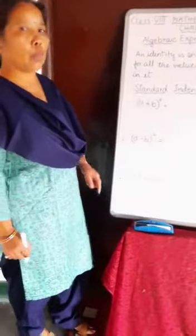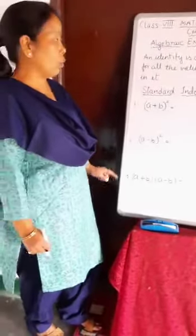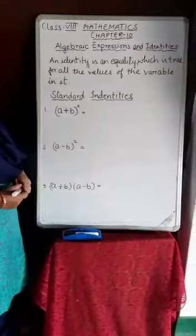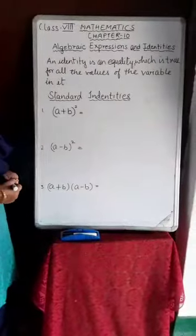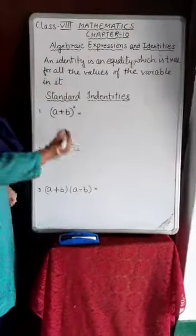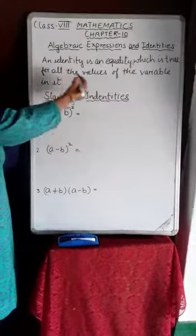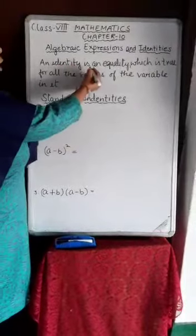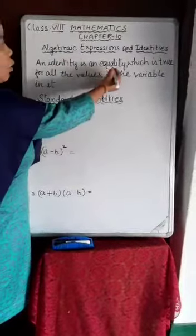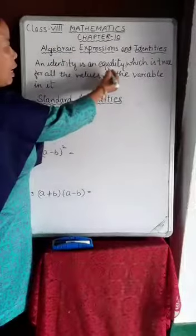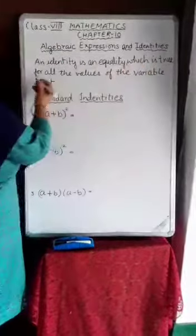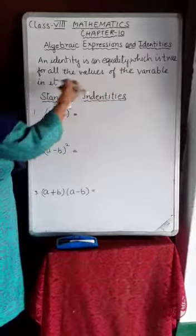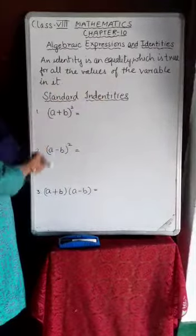Today I am starting chapter 10, exercise 10.5, in which you will learn about standard identities. An identity is an equality which is true for all values of the variables.